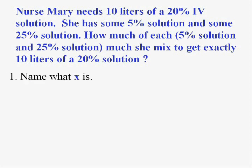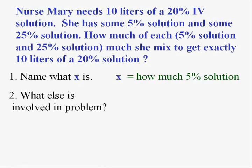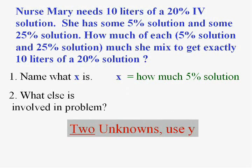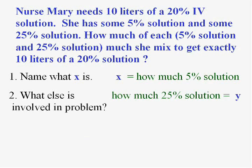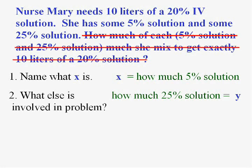Well, first let's name what X is. Always got to start off that way. I'm going to let X be how much of the 5% solution, because it wants to know two answers. I'll just pick one of them. And that means Y will be the other question. Y will be how much of the 25% solution. So I've got that covered. What X and Y are. Let me cross that out, how much of each, because this problem is loaded with information.